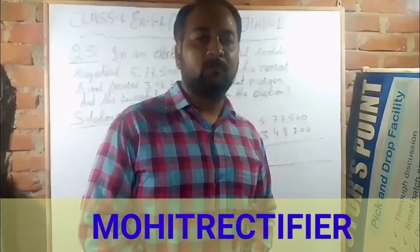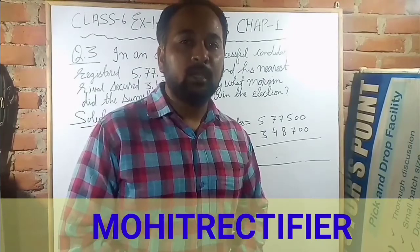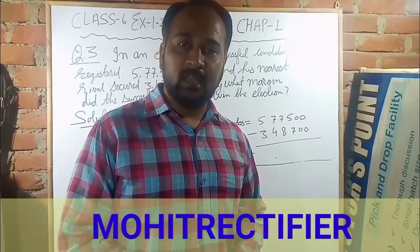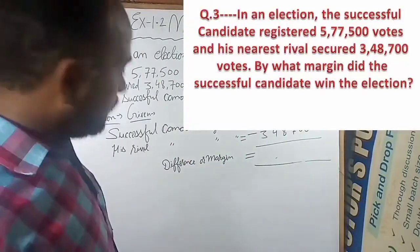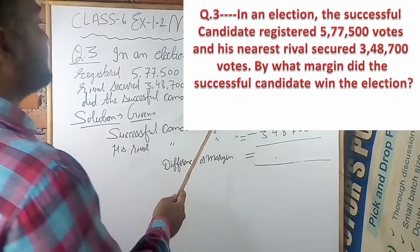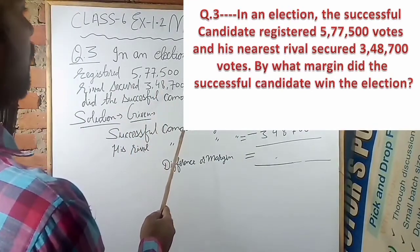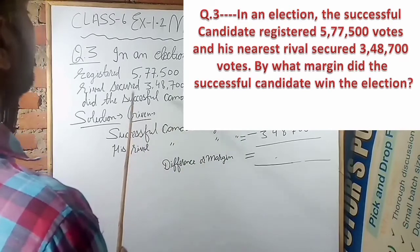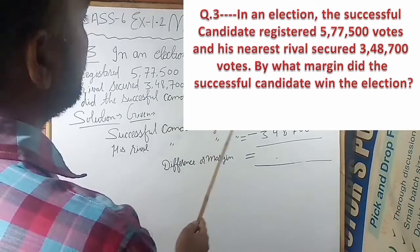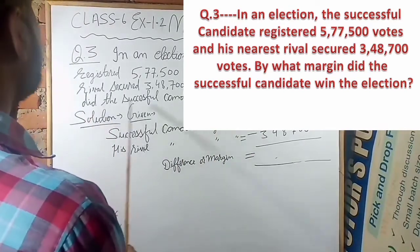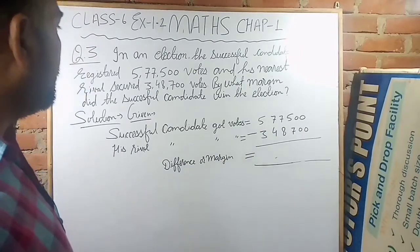Hello students, welcome to my YouTube channel Rectify. My name is my sir. Today we are going to learn question number three, exercise 1.2, Maths Classics. In an election, the successful candidate got five lakh seventy-seven thousand five hundred votes and his nearest rival secured three lakh forty-eight thousand seven hundred votes. By what margin did the successful candidate win the election?